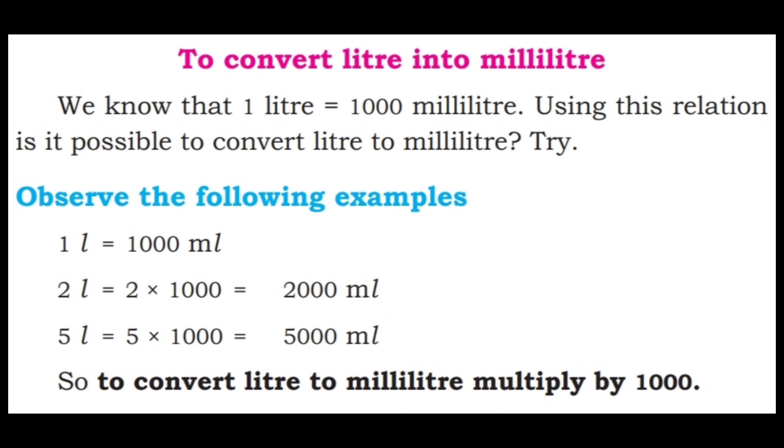1 liter equals 1000 ml. 2 liter equals 2 into 1000, that is 2000 ml. 5 liter equals 5 into 1000, 5000 ml. So, to convert liter to milliliter, multiply by 1000.